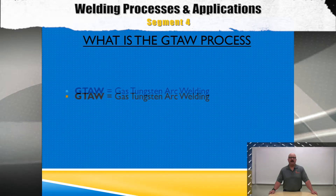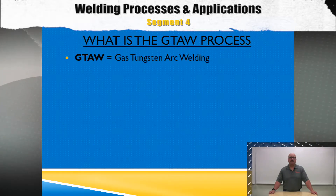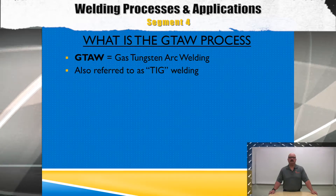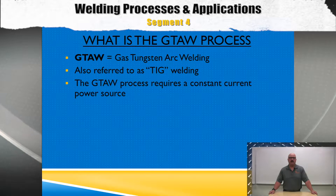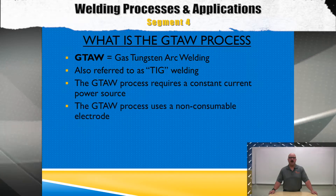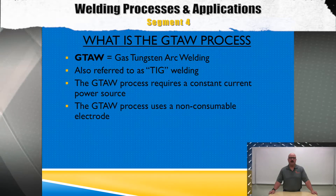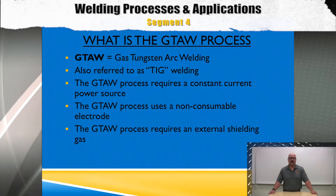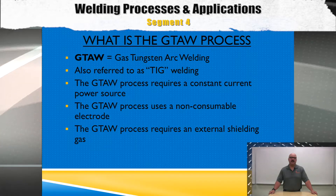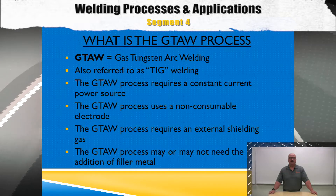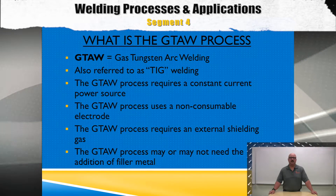GTAW stands for gas tungsten arc welding, also referred to as TIG welding, which is a non-standard term. The GTAW process will require a constant current type power source. The GTAW process uses a non-consumable tungsten electrode and will also require an external shielding gas. When using the GTAW process, filler metal may or may not be used. This is referred to as autogenous welding.